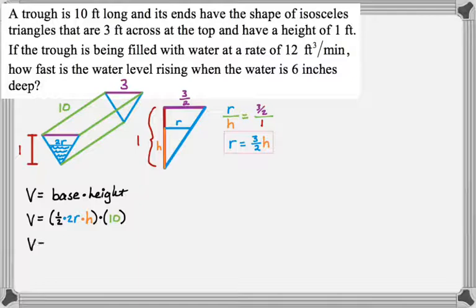So, I have that. This simplifies to 10rh. So, now let's see what we're actually trying to do in the problem. We're trying to find how fast the water level is rising, which really means we're trying to find dh/dt as we set it up. And what do we know?